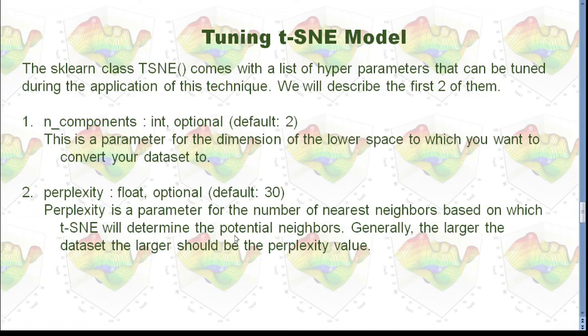When we use Python for our t-SNE model, there are several hyperparameters you can tune for your model. The most important two are the first one, the n_components. That means the dimension of the lower space. And, in this case, we use two. Because, we want to reduce our dimensionality to two-dimensional space. And, another one is perplexity. The default is 30. You can try the different number for perplexity and find out the best hyperparameters for your model.